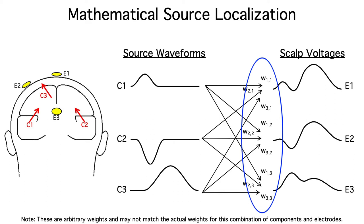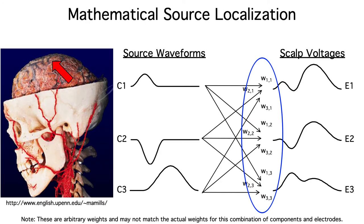The weighting between a given component and a given electrode depends on the location and orientation of the dipole, the location of the electrode, and the conductivity of the brain, meninges, skull, and scalp.